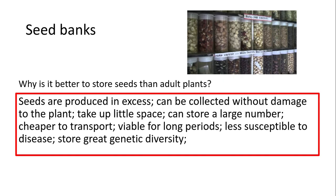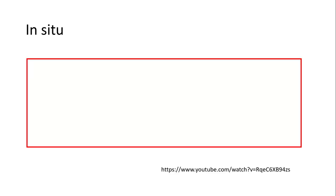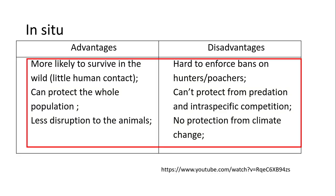Seed banks also store great genetic biodiversity — for example, several different strains of rice grown in different areas around the world. This is particularly useful in disasters: for example, after the forest fires in Australia, seeds from seed banks can be sent over to allow the burnt areas to regrow with the plant species that used to grow there. Seed banks are really good ex-situ conservation.